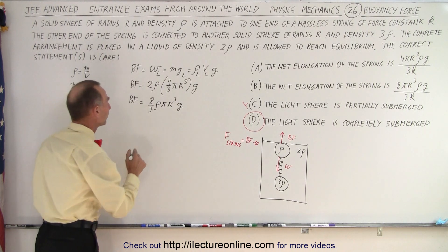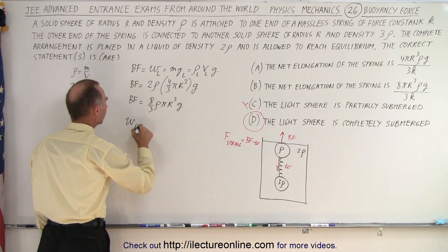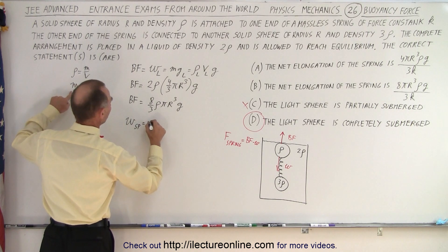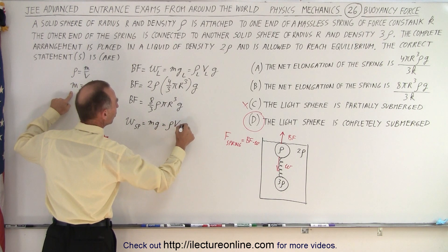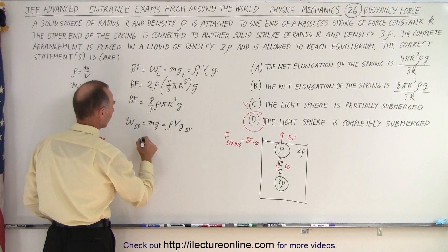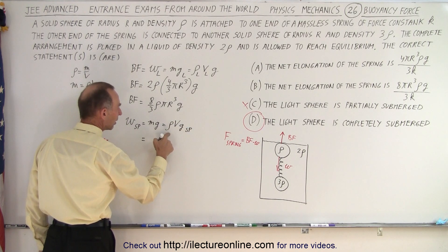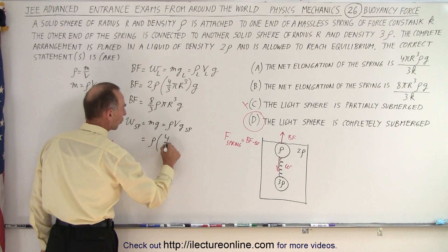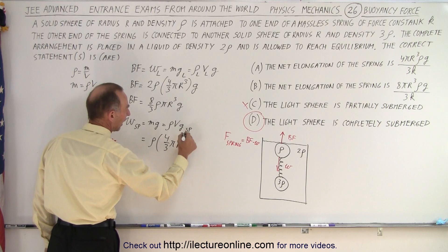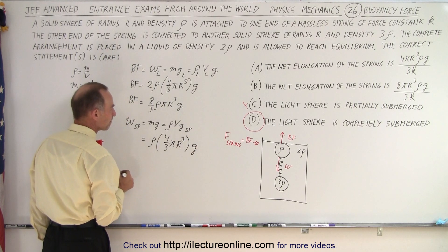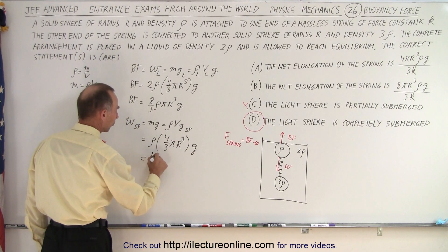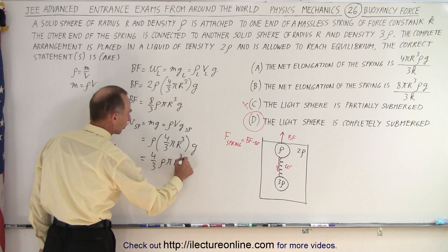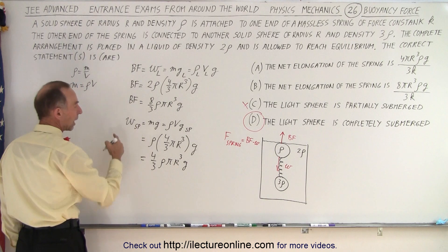Now what about the weight of the sphere? Now the weight of the sphere, the top sphere, is going to be equal to the weight that's going to be m times g, which is rho vg of the sphere. So in this case, we take the density of the sphere, which is rho, the volume, 4 thirds pi r cubed, and g. Now that can be written as 4 thirds density rho pi r cubed g.